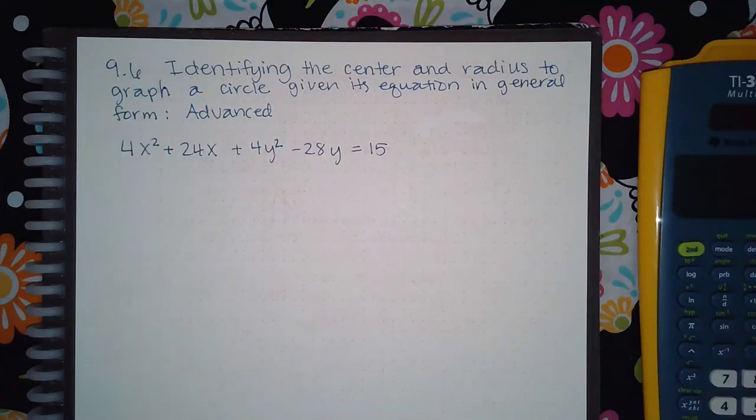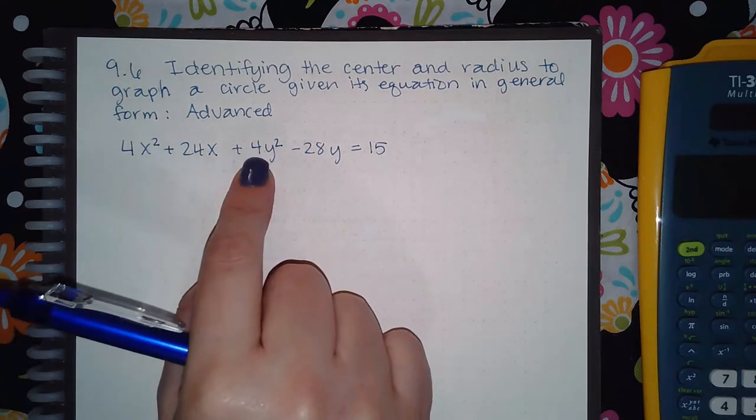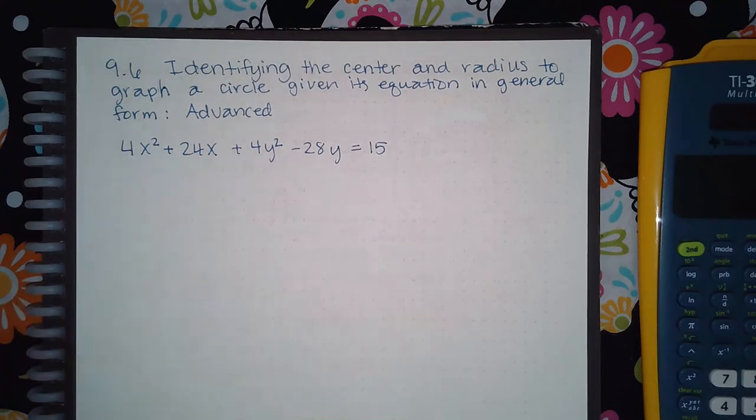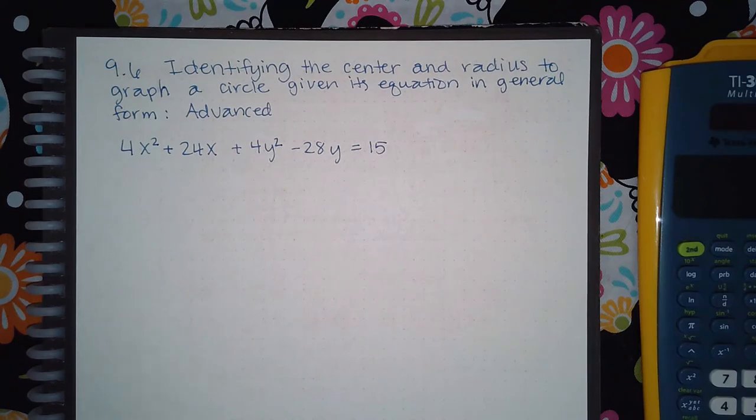Okay, so here we are with 9.6 identifying the center and radius to graph a circle given its equation in general form advanced. Notice that here they have numbers in front of x squared and y squared. If you watch the video in the last topic, you'll notice that I said there should not be a number in front of x squared and y squared if you're trying to graph a circle.